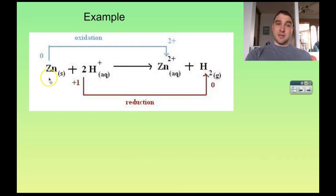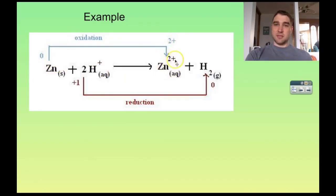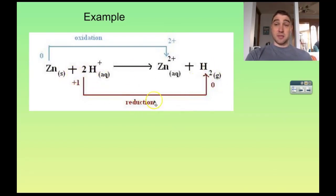The solid zinc is being oxidized to zinc ions — it is losing its two electrons from the outer shell to make the zinc ions. The hydrogen ions are gaining the electrons from the zinc and producing hydrogen gas, so the hydrogen ions are being reduced to hydrogen gas.